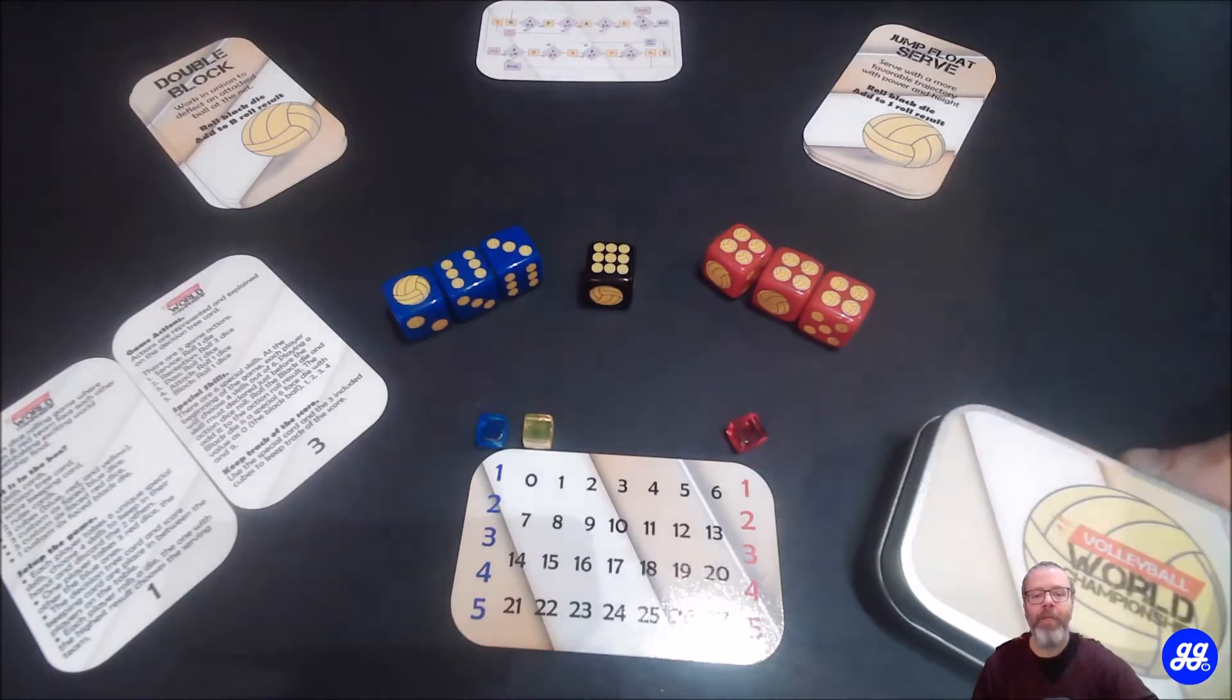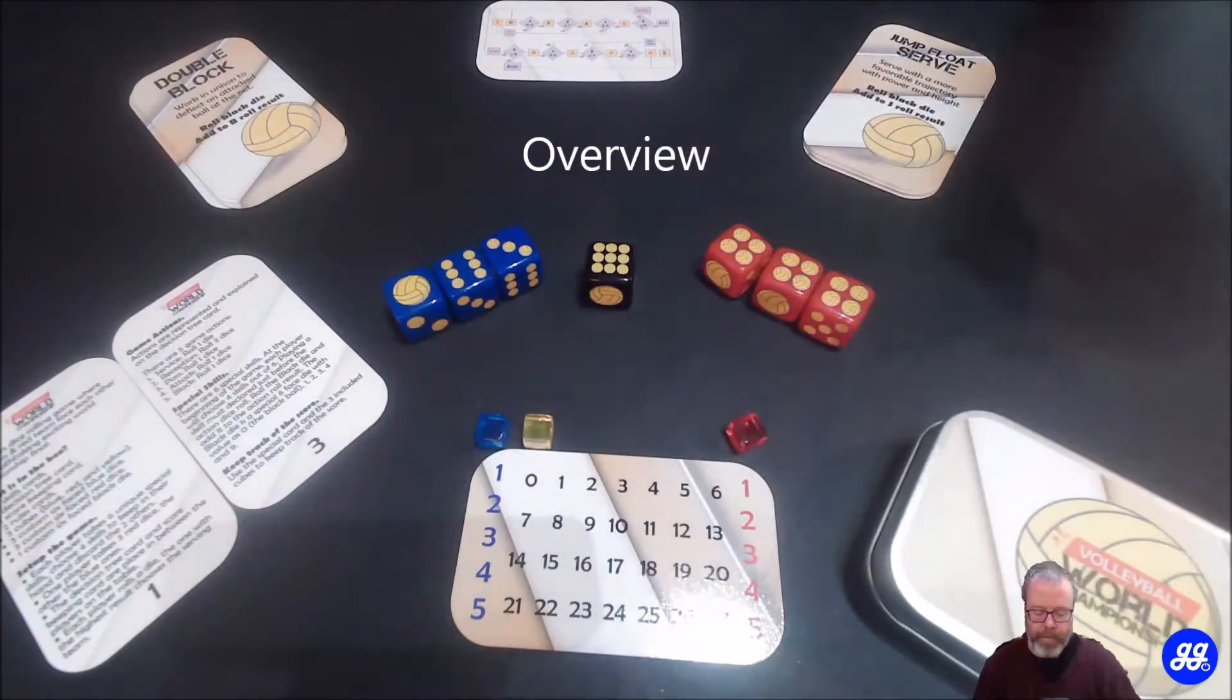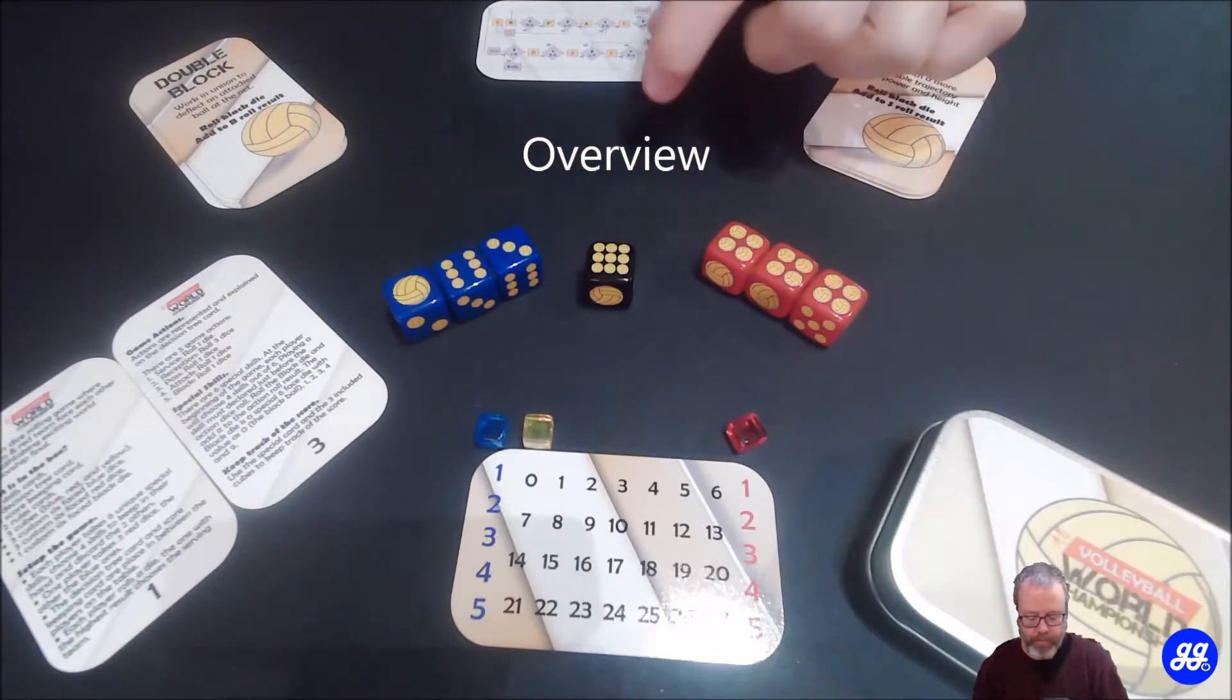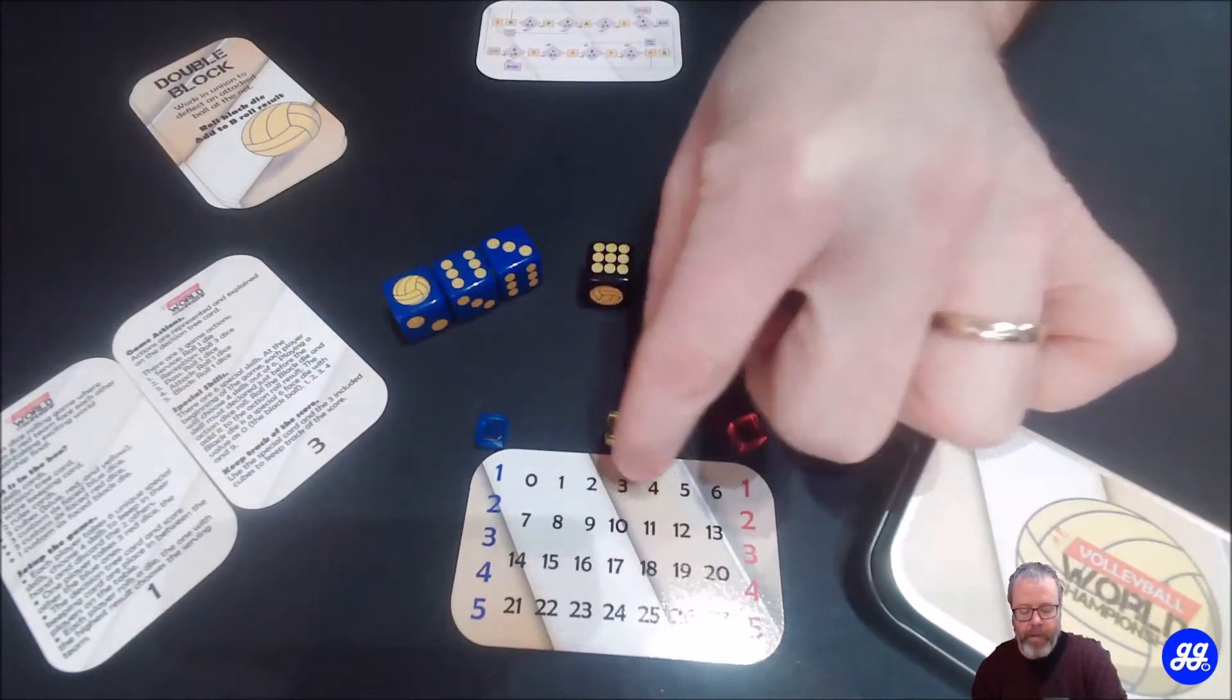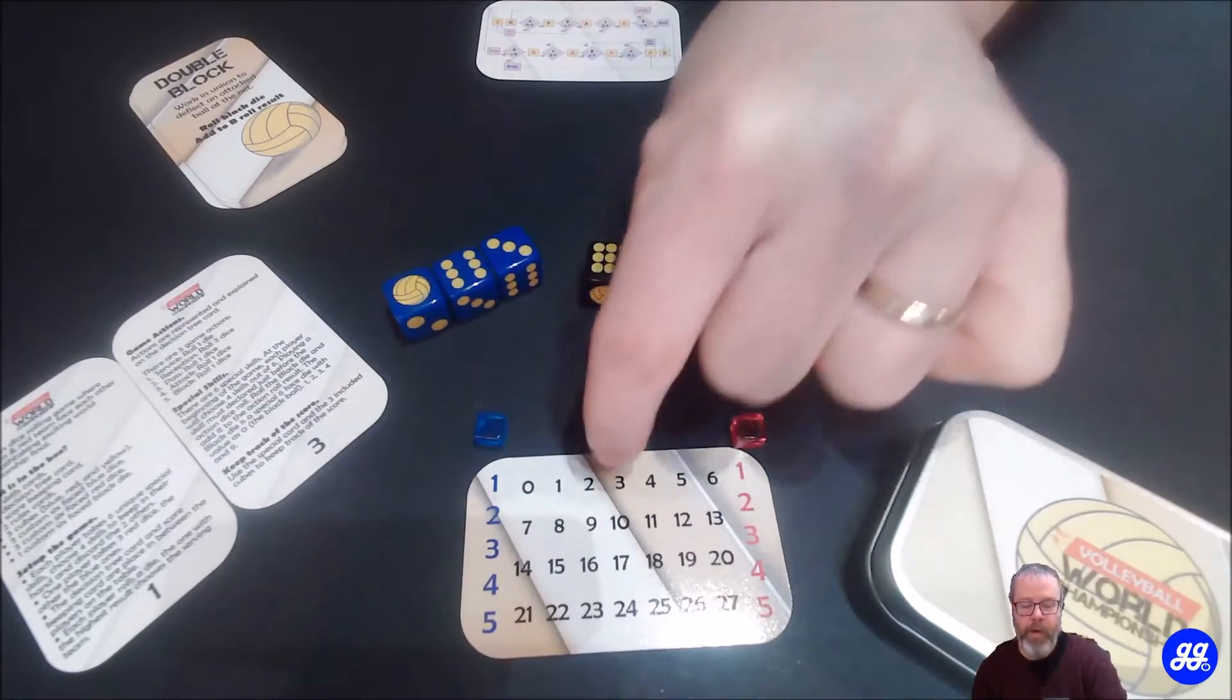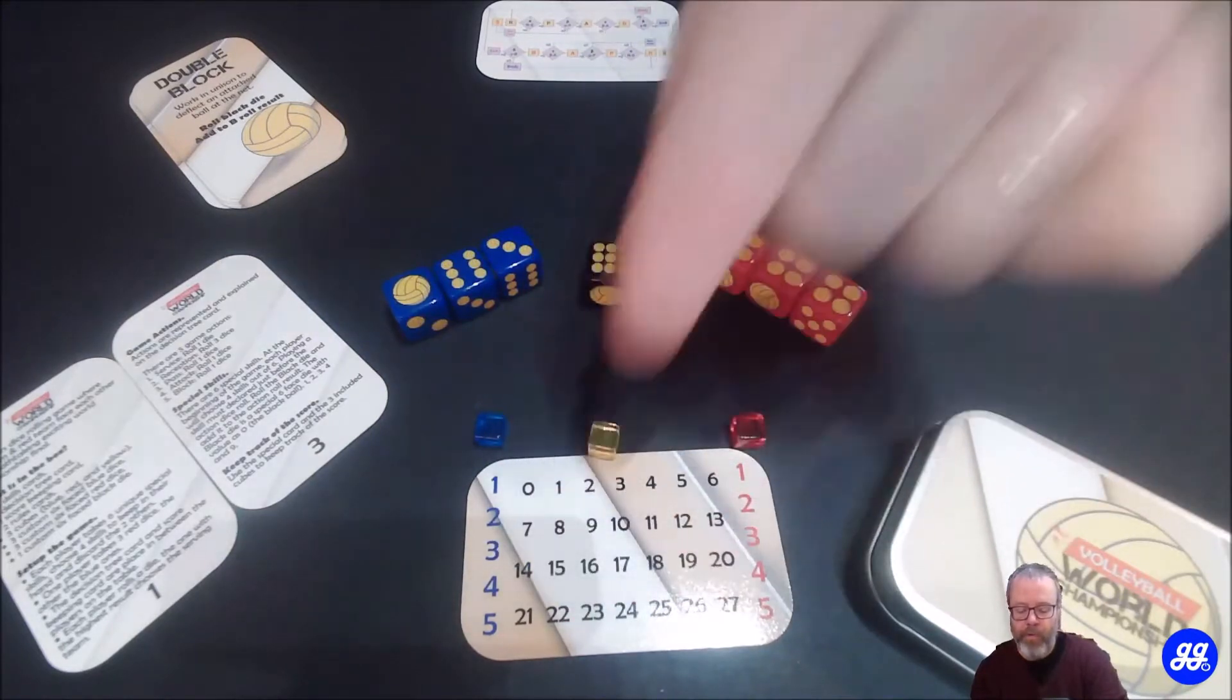So this game comes in the mint tin box. It has seven custom full acrylic dice, three acrylic cubes. One blue to keep the score, one red to keep the score, and one yellow to represent the ball, which help you to make your calculations.